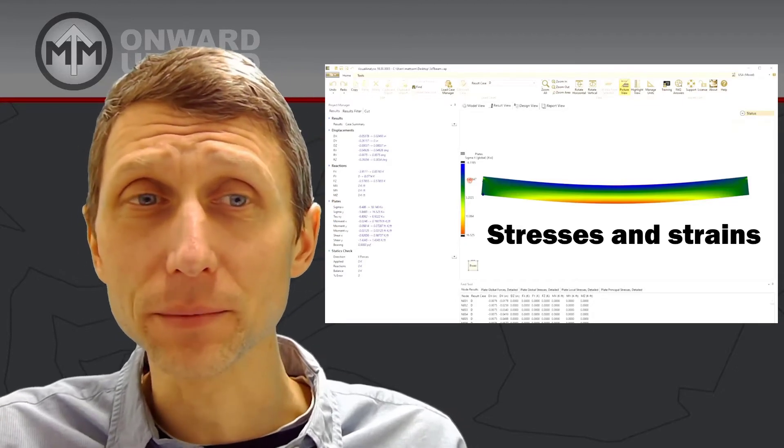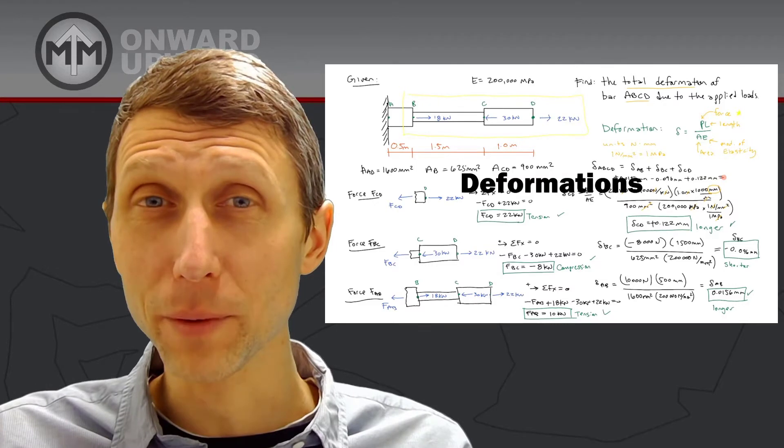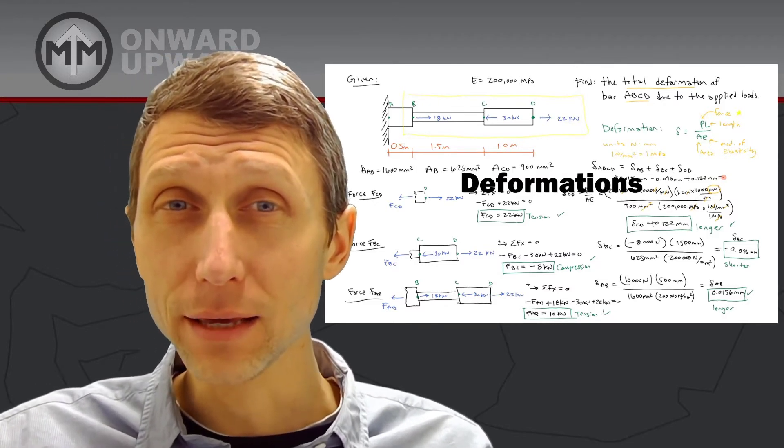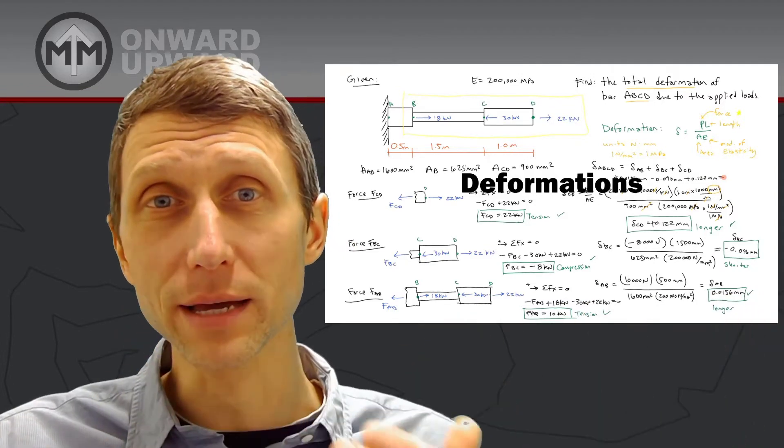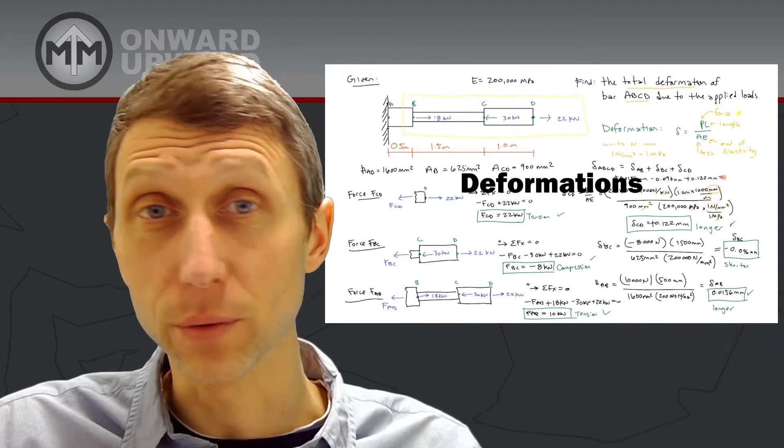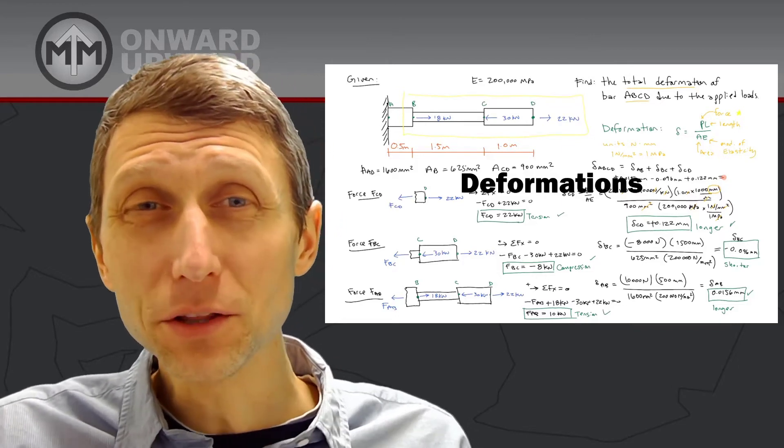We also have to understand deformations using the formula PL over AE. That's axial deformation - how much a member gets longer or shorter based on the force direction, whether it's in tension or compression.